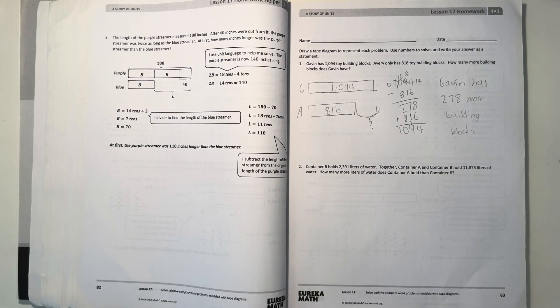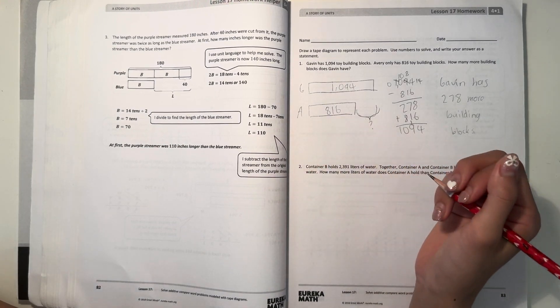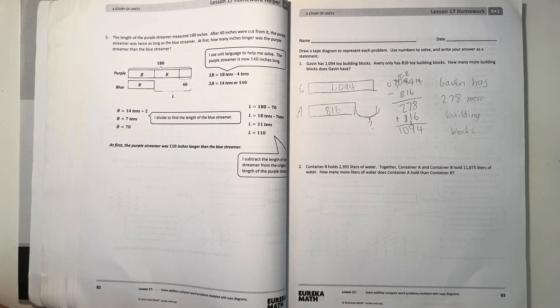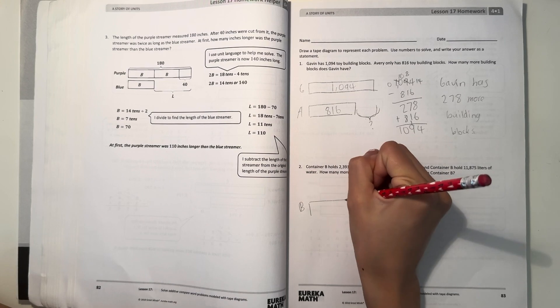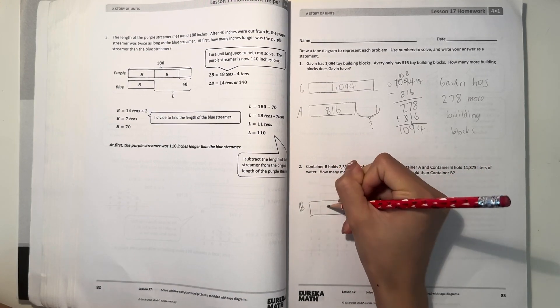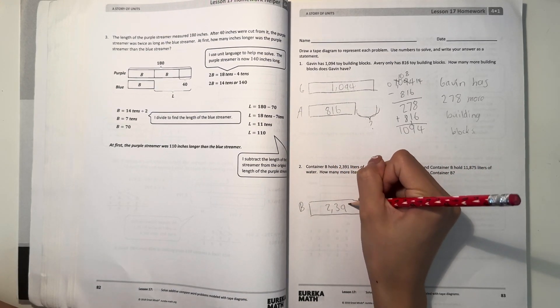And number two, we have container B holds 2,391 liters of water. Together container A and container B hold 11,875 liters of water. How many more liters of water does container A hold than container B? So let's see.